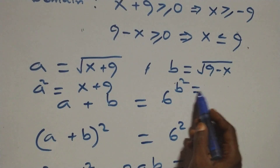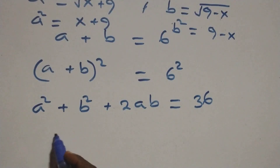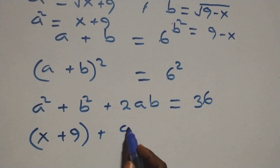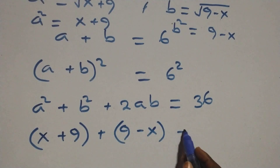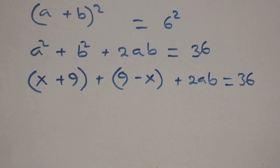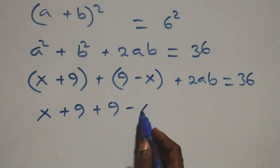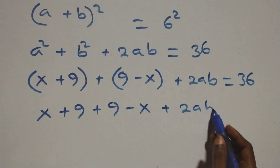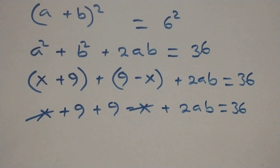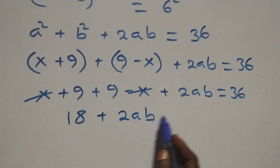Also, b squared equals nine minus x. When we write it out, we have a squared which is x plus nine, plus b squared which is nine minus x, plus two ab, equals 36. Removing the brackets we still have x plus nine plus nine minus x plus two ab equals 36. Here x minus x cancels out, giving us nine plus nine, that's 18, so 18 plus two ab equals 36.